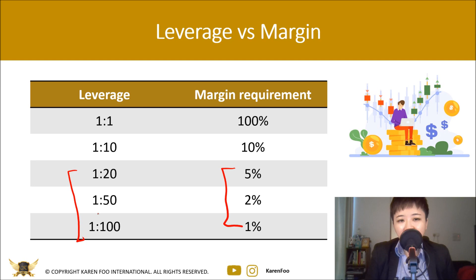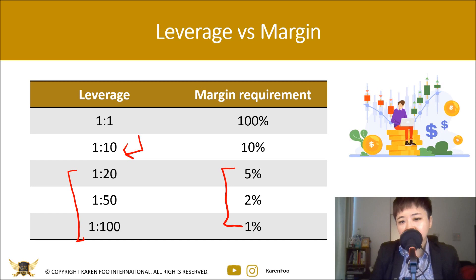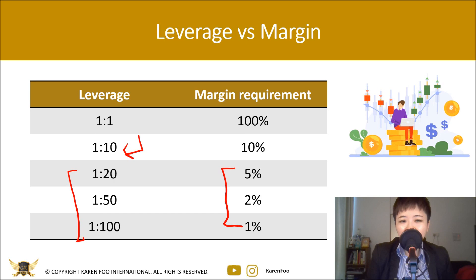Professional traders generally recommend using a leverage of 1:10 or less, because you don't need high leverage to make good money from forex — especially if you have good capital. The reason many traders use high leverage is because they trade with very small accounts like $100. If you don't have the money to trade forex, try not to get into it until you have a minimum of $1,000.